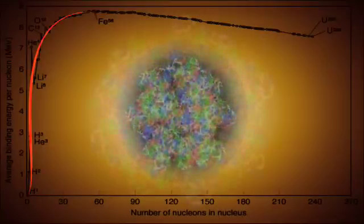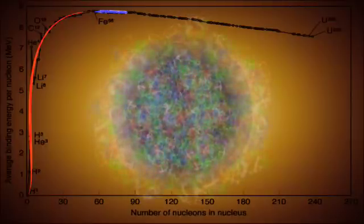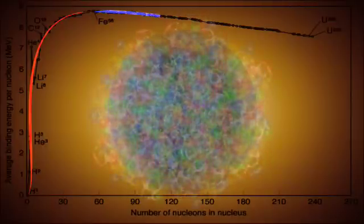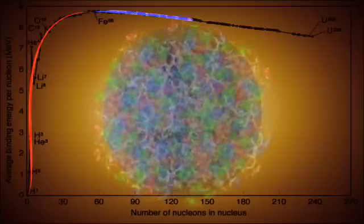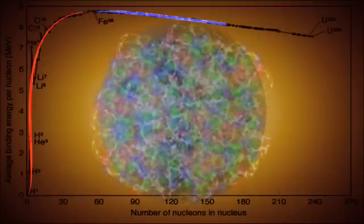So as we add nucleons past this point, the electric force trying to tear the nucleus apart starts winning, and each added nucleon is a little less tightly bound.